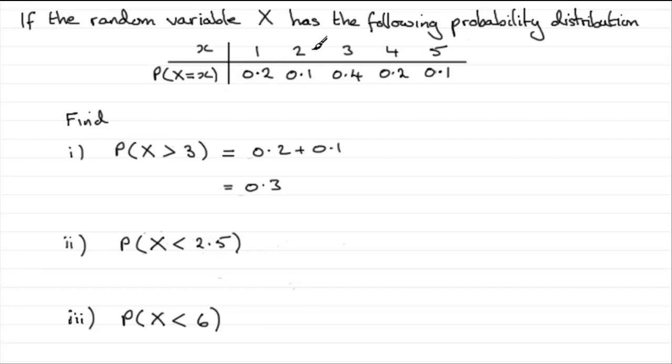So the first value that is less than 2.5 is the 2. So we've got to add together the probabilities of X being 1 and X equaling 2 when we get something like this.